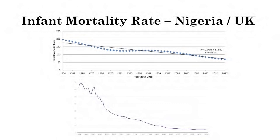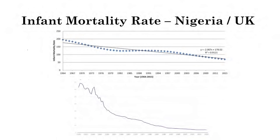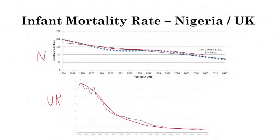Two graphs compare infant mortality rates in Nigeria and the United Kingdom. Both countries show decreasing infant mortality rates, but at different rates. The UK's rate has decreased at an overall exponential rate — decreasing a large amount — while Nigeria's has decreased at a more linear rate.